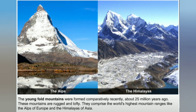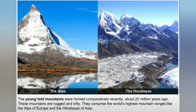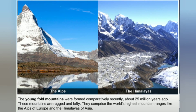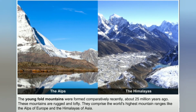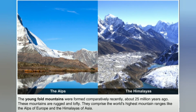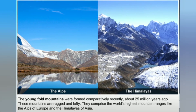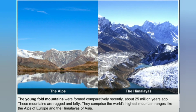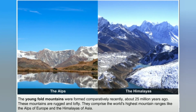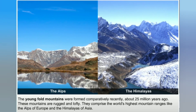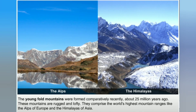The young fold mountains were formed comparatively recently, about 25 million years ago. These mountains are rugged and lofty, and comprise the world's highest mountain ranges like the Alps of Europe and the Himalayas of Asia.